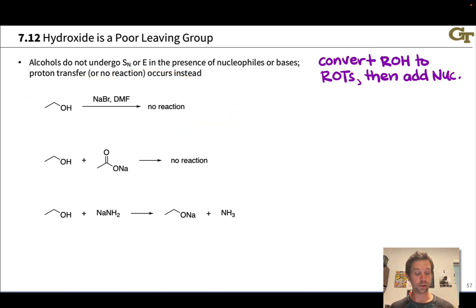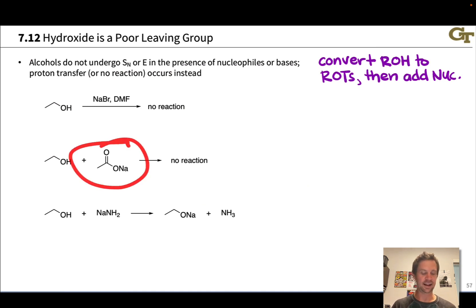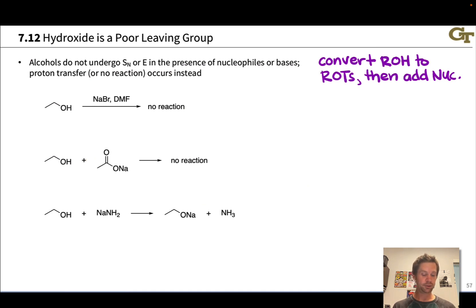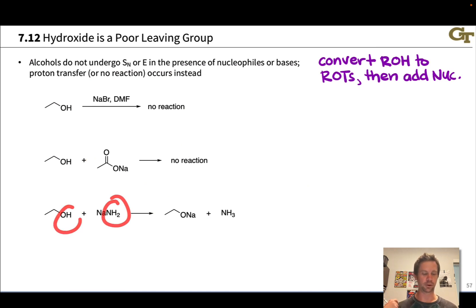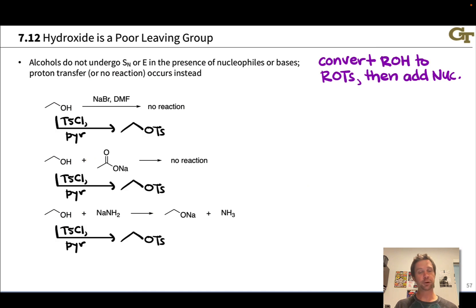All three of these reactions as written have problems. When we treat ethanol with bromide, no reaction occurs because the hydroxyl group is a poor leaving group — OH⁻ is not the conjugate base of a strong acid. Likewise with acetate, the acetate anion is a solid nucleophile but OH⁻ is not a good leaving group, so no reaction occurs. And in the presence of a very strong nucleophile like NH₂⁻, we actually see deprotonation of the OH group forming a sodium alkoxide, instead of the desired amine substitution product.